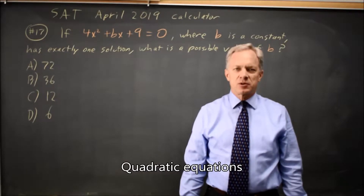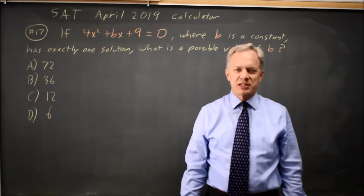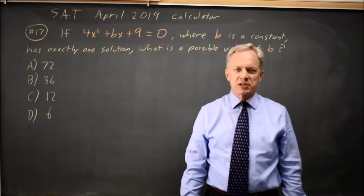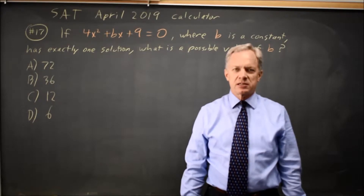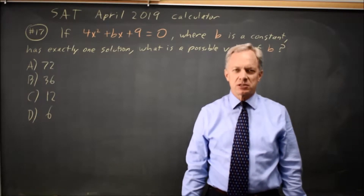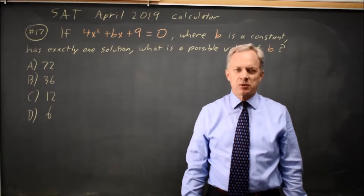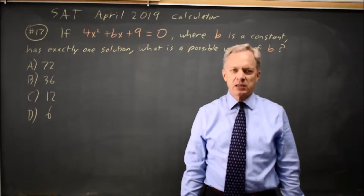This is calculator question number 17 from the April 2019 SAT. College Board gives us a quadratic and says this quadratic equation has only one solution. What is a possible value of b?